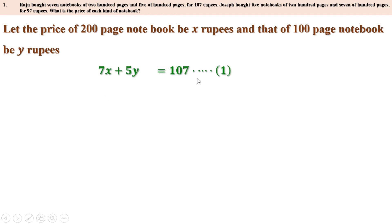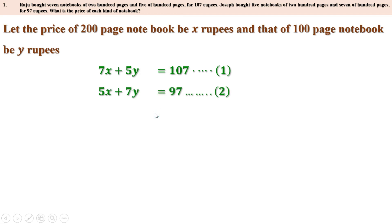We consider this as the first equation. Joseph bought 5 notebooks of 200 pages and 7 of 100 pages for 97 rupees. For 5 notebooks of 200 pages he pays 5X rupees, and for 7 notebooks of 100 pages he pays 7Y rupees, totalling 97 rupees. That gives us 5X plus 7Y equal to 97, which we consider the second equation.